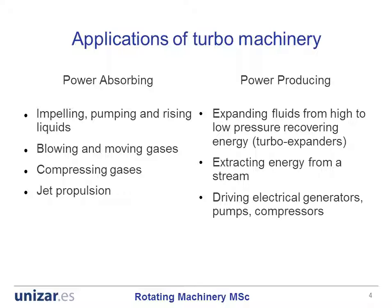The applications of turbo machinery can be divided into those of power absorbing and power producing machines. Power absorbing machines are used to impel, pump and raise liquids, blow, move, push and compress gases, as well as in jet propulsion.